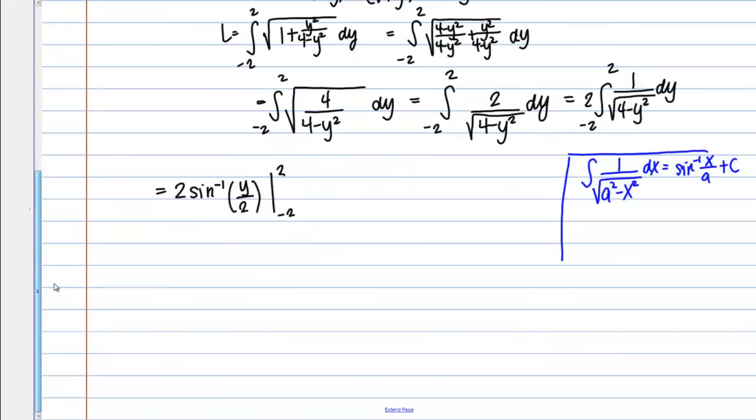Alright, so that worked out pretty nicely for us. So let's go ahead and actually plug in those bounds. So we get 2 inverse sine of 1, right? If I plug in 2 here, I just get 2 over 2, minus 2 inverse sine of negative 1, right? Negative 2 over 2 would give me negative 1 inside. Now I can actually go a little further, right? Because I should know what the inverse sine of 1 and the inverse sine of negative 1 are.